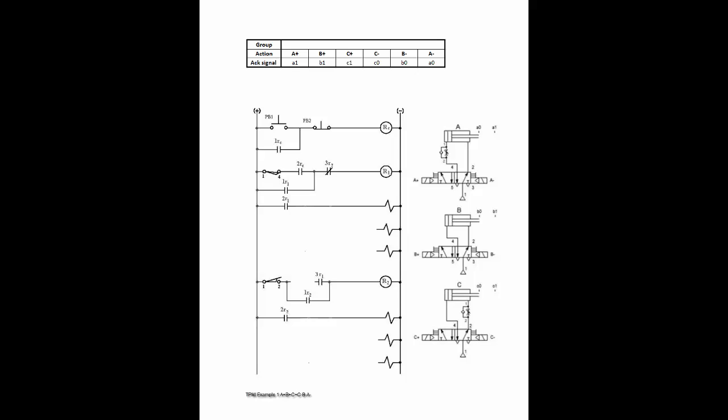Now we need to group the actions. Remember the rule: no alphabet of the same type is allowed to be included in the same group. Therefore, A plus, B plus, C plus are in group 1. C minus, B minus, A minus are in another group, group 2.